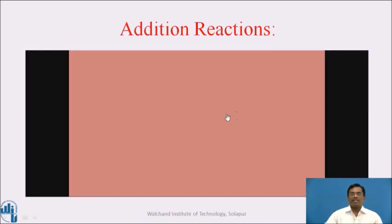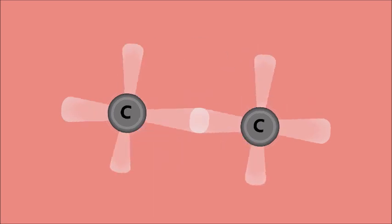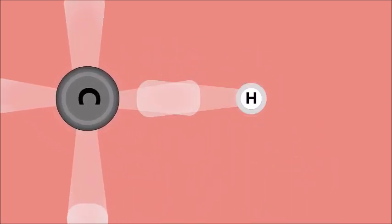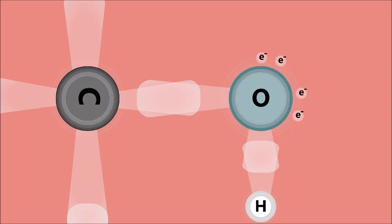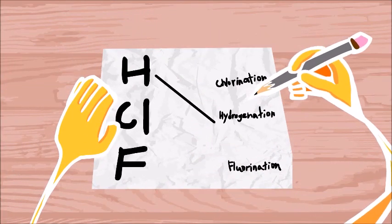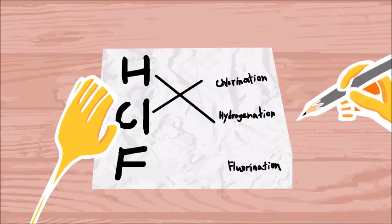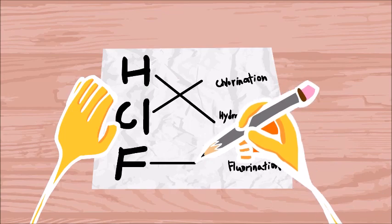We can see this video downloaded from YouTube regarding addition reactions. When an addition reaction happens, a carbon-carbon double bond or triple bond of an organic compound is broken. The electrons shift to connect to hydrogen atoms, halogens, hydroxides, or other compounds. Connecting with hydrogen is called hydrogenation, connecting with chlorine is chlorination, and when fluorine bonds with the organic compound, we call it a fluorination reaction.